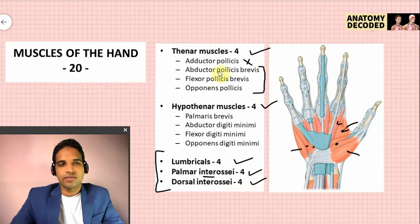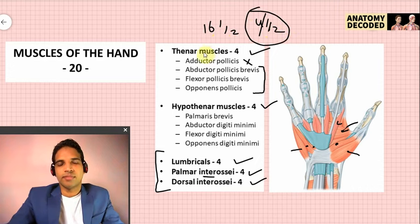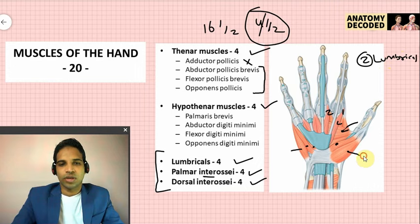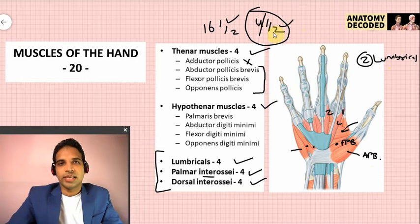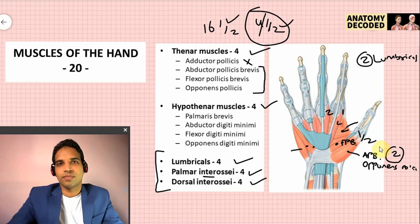For nerve supply of hand muscles, remember the 16-and-a-half and four-and-a-half formula: 16 and a half muscles are supplied by the ulnar nerve and four and a half by the median nerve. The four and a half supplied by median nerve are: the first and second lumbricals, abductor pollicis brevis, opponens pollicis, and half of flexor pollicis brevis (which is a hybrid muscle — one half median, one half ulnar). All remaining muscles of the hand are supplied by the ulnar nerve.